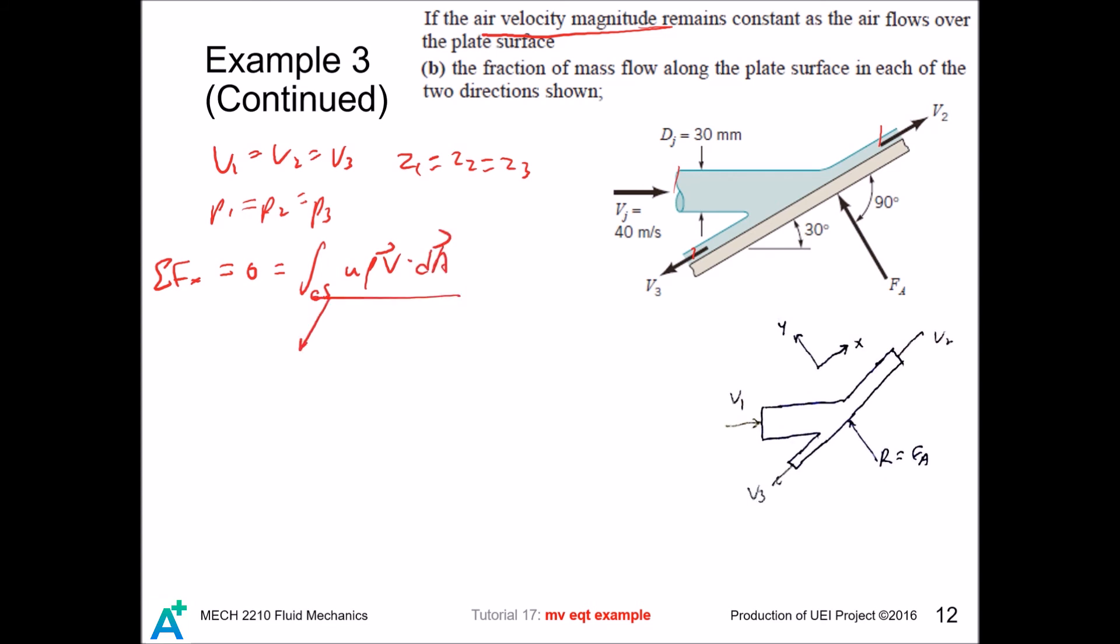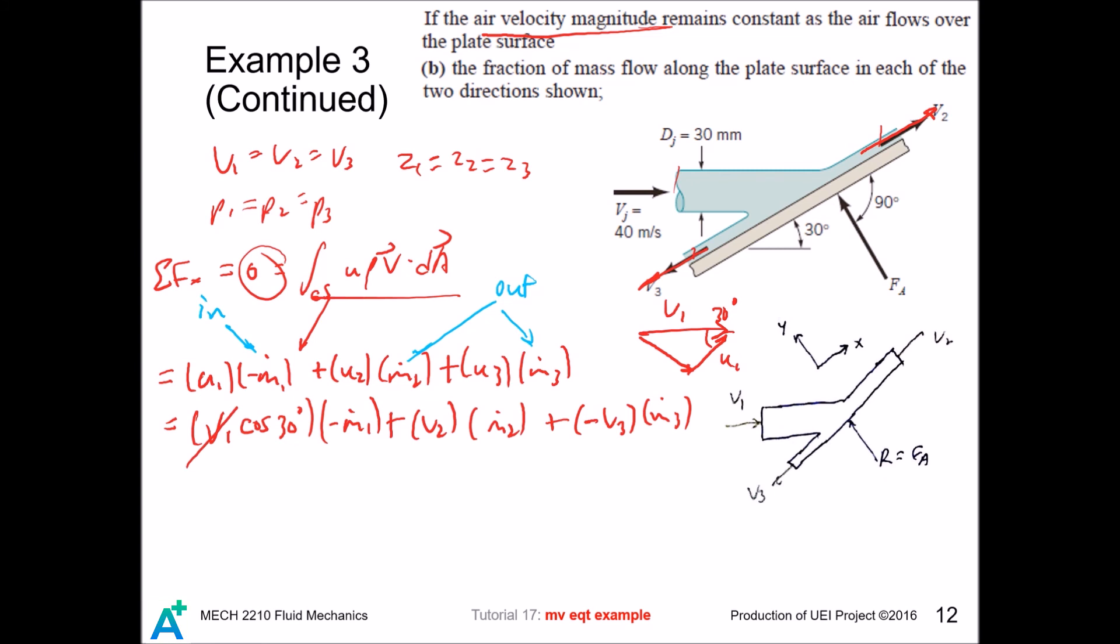And that is the integral. Again, we expand this integral. Since this is in and 2 and 3 are going out. And we continue to get U1, U2, and U3. Velocity 1 goes this way. This is the Y component and this is the X component. And this is 30 degrees. So U1 is indeed positive and it is V1 cosine 30. And velocity 2 is going exactly in the X direction. And velocity 3 is going exactly opposite to the X direction. Since this whole thing equals 0, we can always cancel this velocity. This is our equation 1.